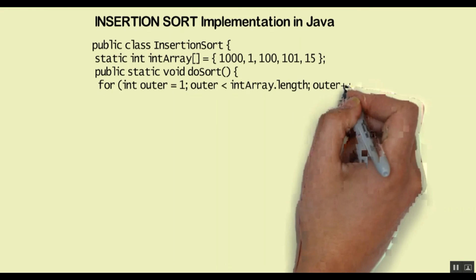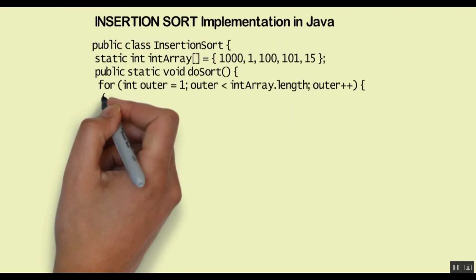Let's see the first for loop with the counter 'outer'. This for loop represents where your unsorted list starts. As you remember in the whiteboard animation, we started the sorting from the second element, which in Java is represented by index 1. So we start the outer counter with 1 and it runs till the whole array is covered — starting with 1 as the first number in the unsorted list and going till we reach the end of the array, which is number 15.